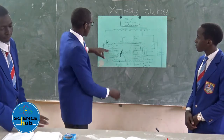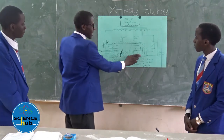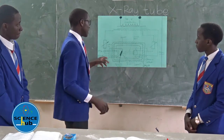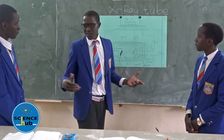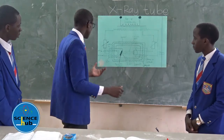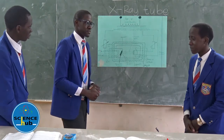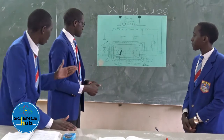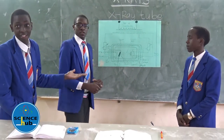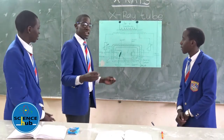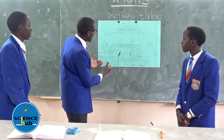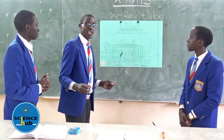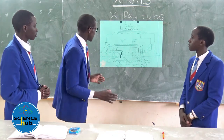We also have the anode, normally positively charged, made of copper. Why is it made of copper? Because copper is a good conductor of heat — copper has the ability of dissipating heat. For us to produce X-rays, there is a lot of heat production in the process.